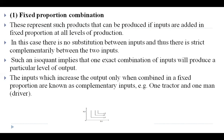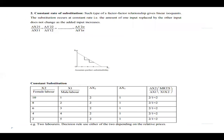The second type is constant rate of substitution. In this type of factor-factor relationship, we get a linear isoquant — that is, a straight line. The substitution operates at a constant rate because the amount of one input replaced by the other does not change as the added input increases.